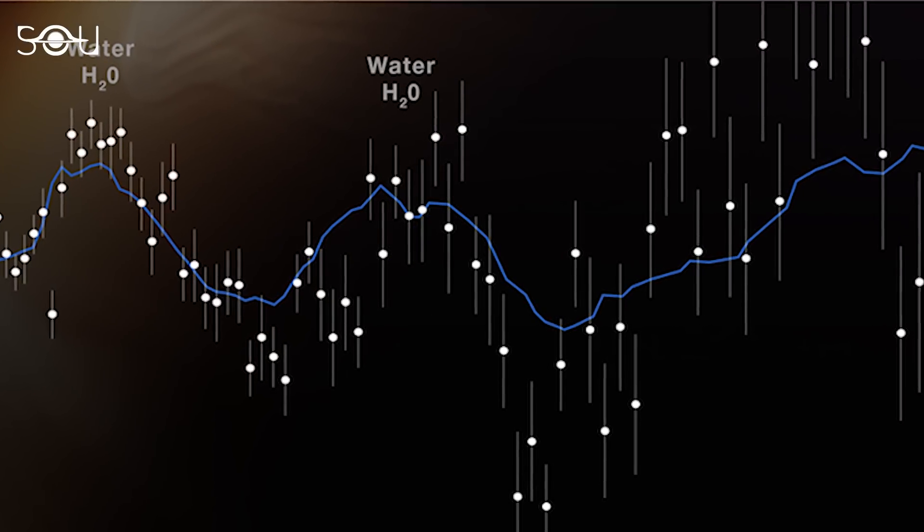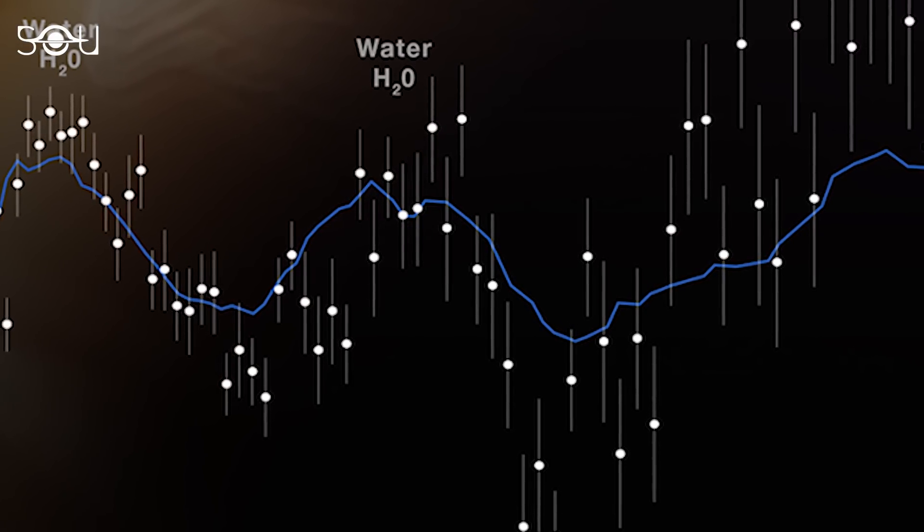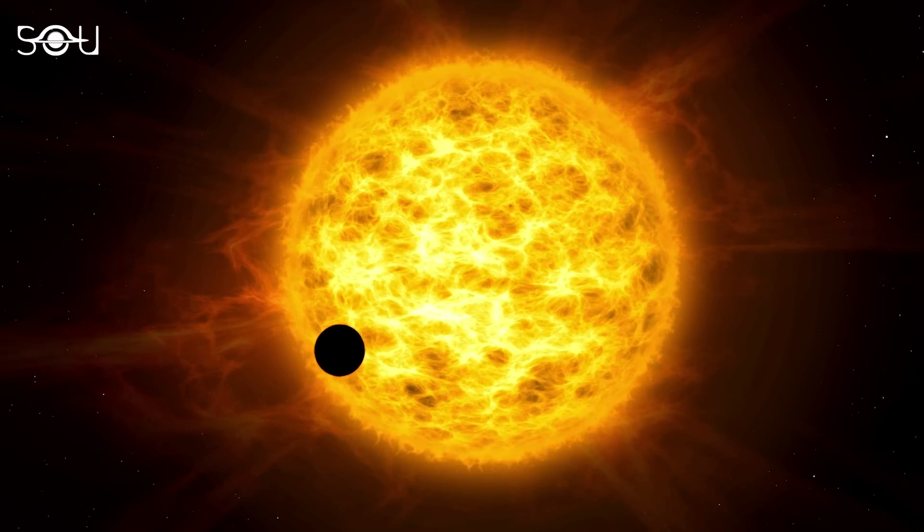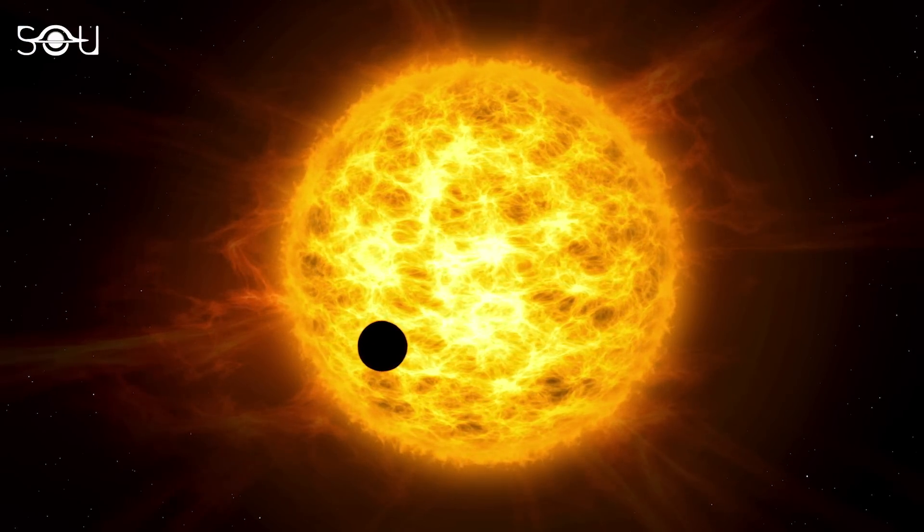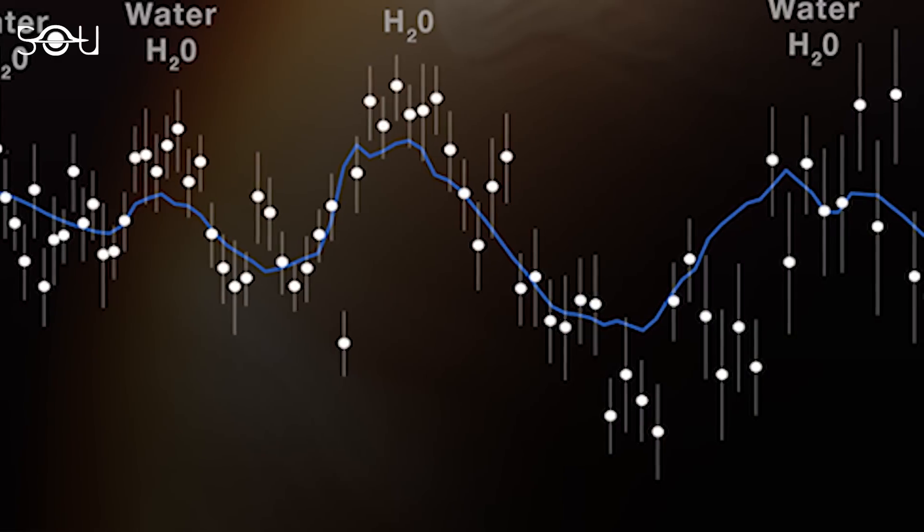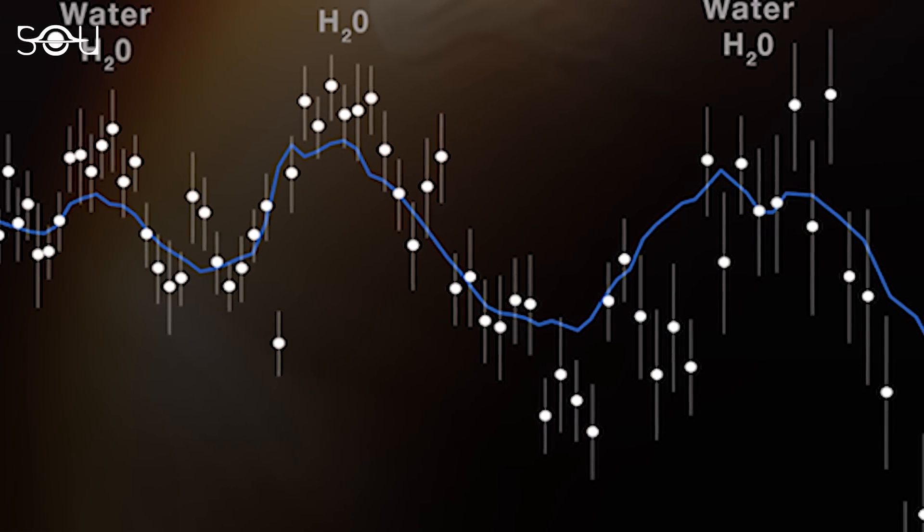The grey lines surrounding each data point are the error bars showing the uncertainty of each measurement. Considering that the data resulted from a single observation, the error on these measurements is remarkably small. Further, the blue line is a best-fit model that is considered to deduce the system's properties.